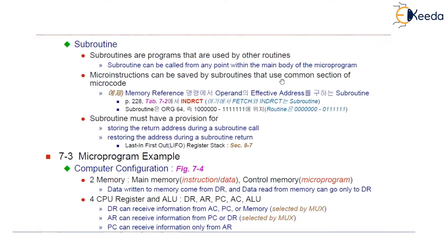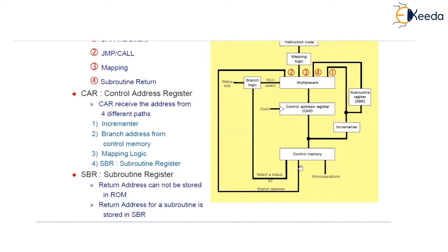Micro-instructions can be saved by subroutines that use the common section of the micro-code. In memory reference instructions, an operand can have an effective address in indirect format, so at that point we need to execute an indirect routine. A subroutine must have a provision for storing the return address during the subroutine call, and restoring the address during the subroutine return. We have already seen this in the sequencer. When a subroutine has been called, a branch address will be taken. For the sequencer's multiplexer, there are four inputs: the next instruction's address (CAR plus one), the subroutine register's input, the mapping code, and the branch address.